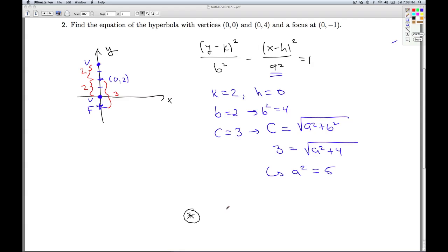y minus k would be (y-2)² over b squared, which is 4. Minus x minus h would be x minus 0. That's just x² then over a squared, which is 5, equals 1. So that'll do it for number two, and that'll do it for checkpoint quiz 7.5.